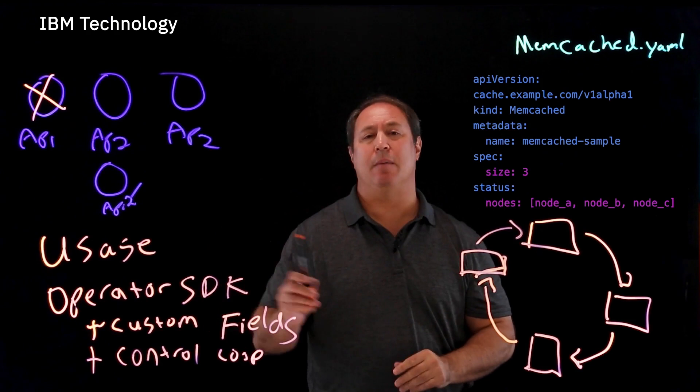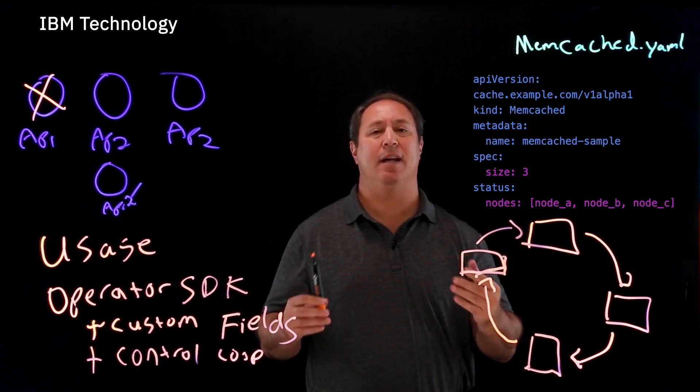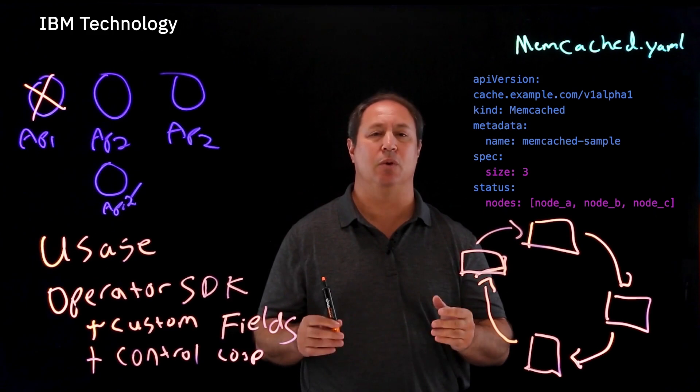we can then go back to the operator SDK. It will allow us to generate a new image of this operator, this custom operator that we've created. And it will also enable us to deploy that operator. Once that operator is deployed, it's going to run just like any other part of the resources that are running in your Kubernetes environment.